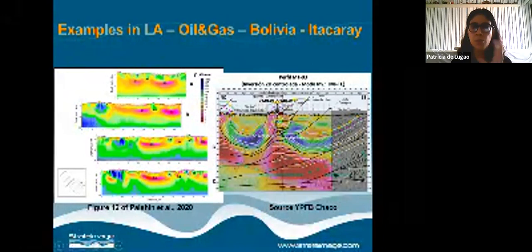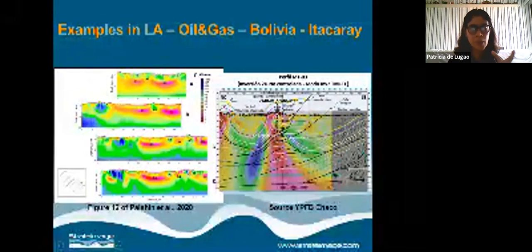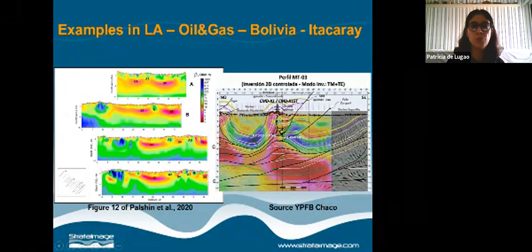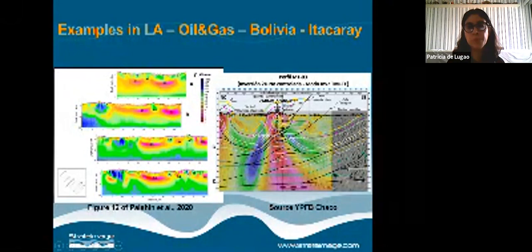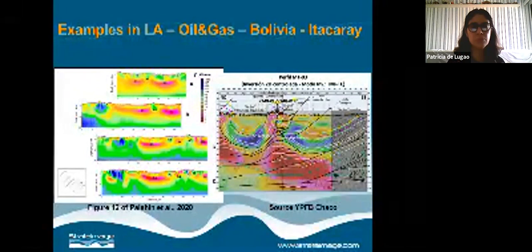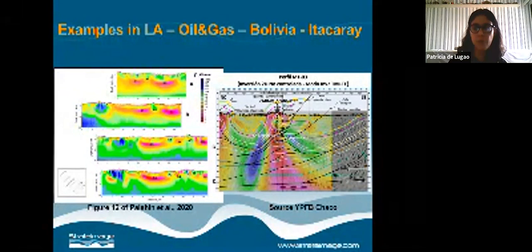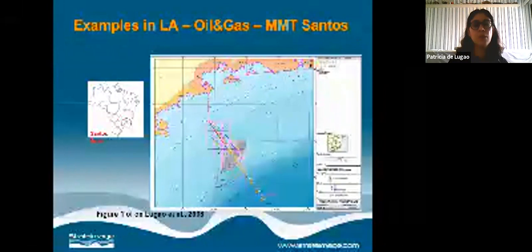For the Itakarai project in the southern part, they did both unconstrained and well-constrained inversion. The seismic provided very little information because of the high-velocity-over-low-velocity problem, where you immediately have imaging difficulties.